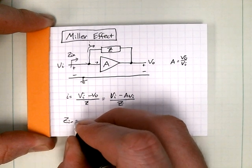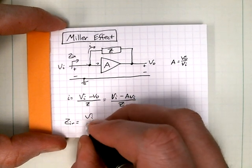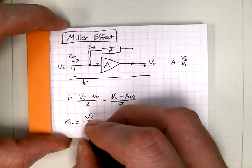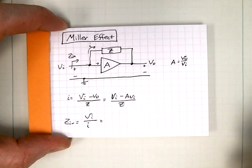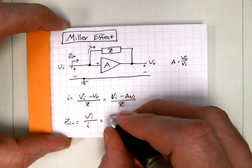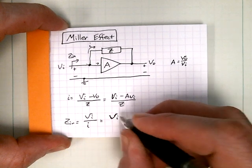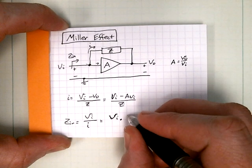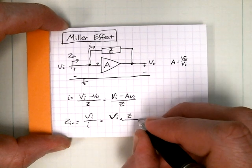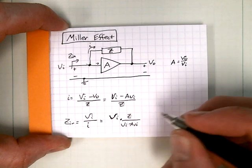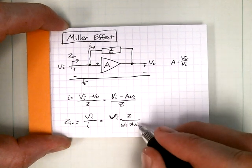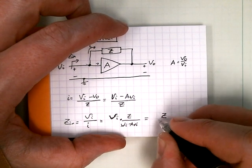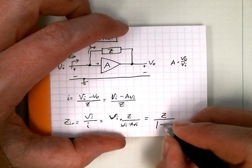Well, zin is just vi, the ratio of the voltage between those nodes and the current flowing there, which is i. I don't know what vi is, so we'll just keep it there. We can't plug any number in. One over i, which is z over vi minus A times vi. All the vi's cancel. We end up with z over one minus A.